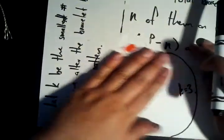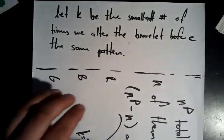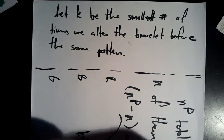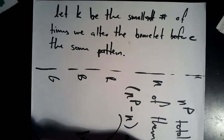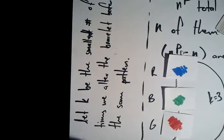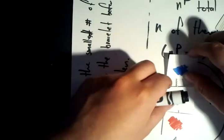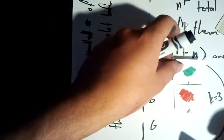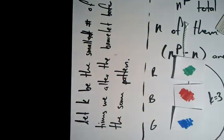So now we're going to make some more definitions. Let K be the smallest number of times we alter the bracelet before the same pattern emerges. And we're going to define the word alter like this. Alter means you put your beads on there. We're going to define alter as shifting everything up one. So blue comes off to the bottom, these two get shifted up one, and this goes right here. So that's alter.